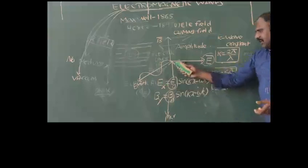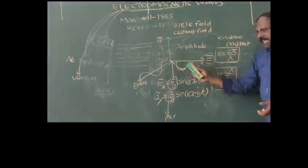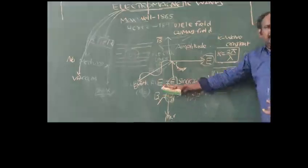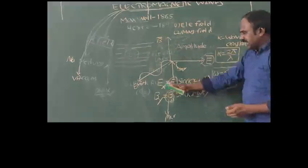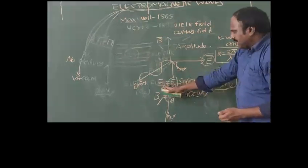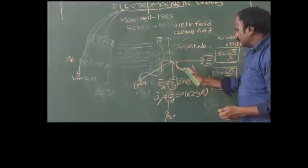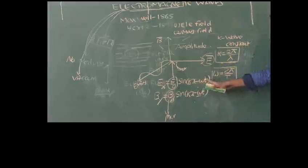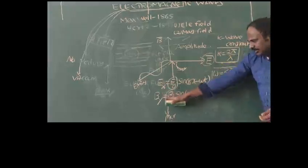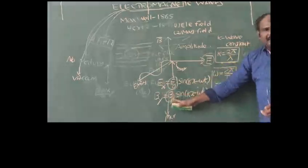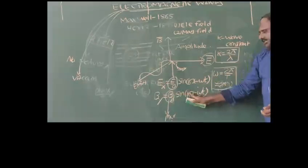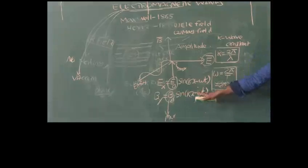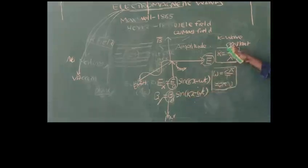So the two wave equations are: electric field along x-axis, Ex = E₀ sin(kx − ωt), and magnetic field along y-axis, By = B₀ sin(kx − ωt), where k is the wave constant with formula 2π/λ and ω is the angular velocity with formula 2πf.